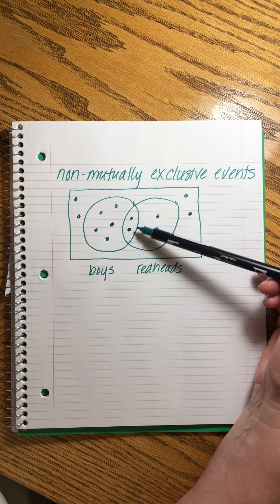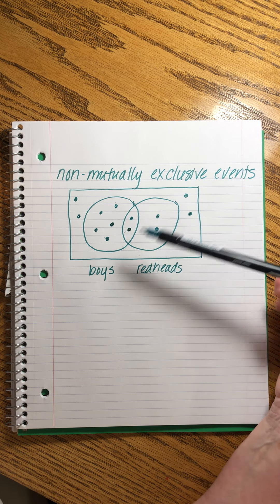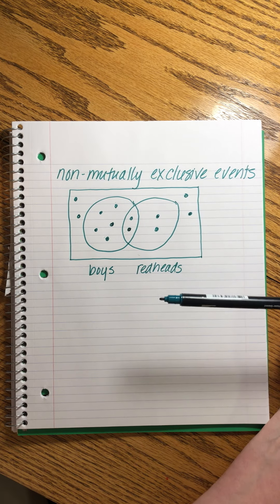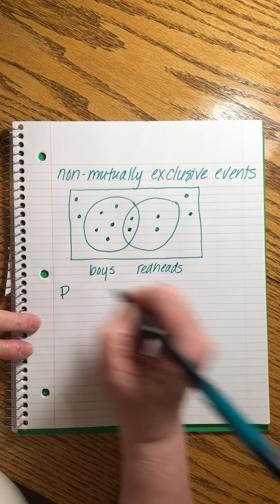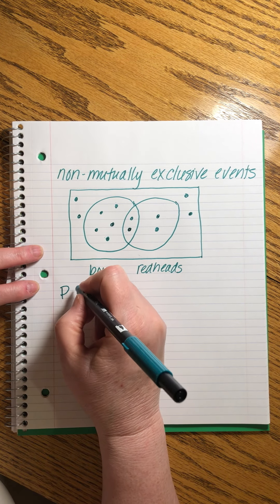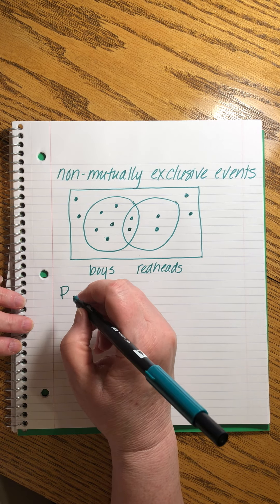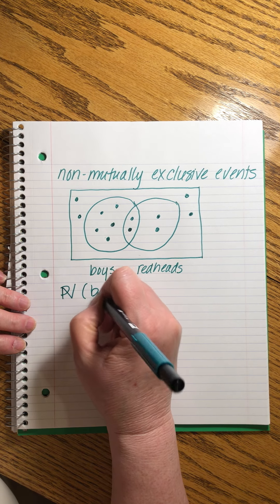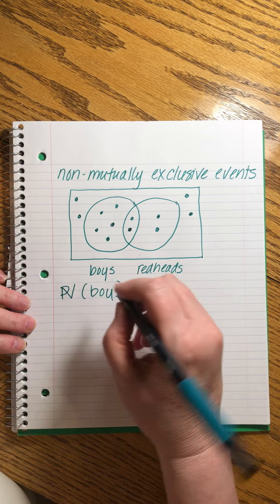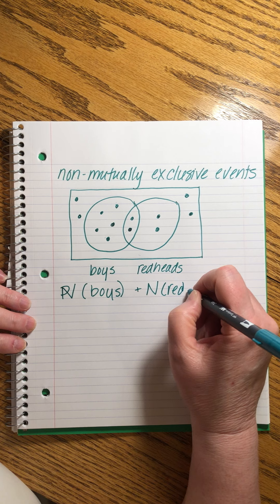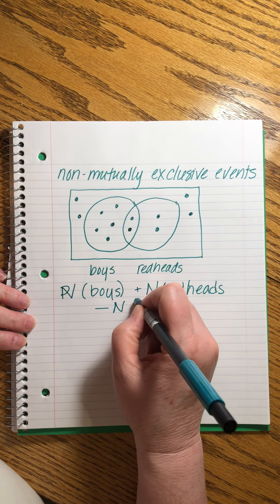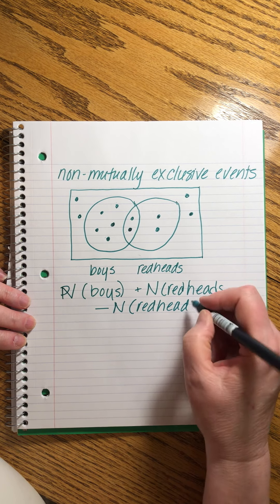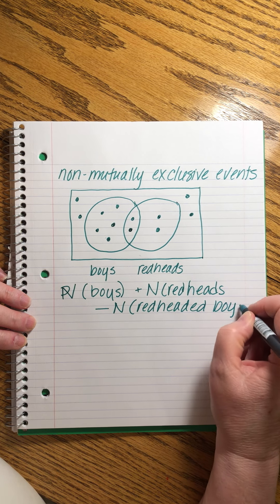We've got this group of boys and girls. The boys are identified here — there are seven of them, and two of them also happen to be redheads. The point here is that being a boy and being a redhead are not mutually exclusive; it is possible to be both. So we need to calculate the probabilities here a little bit more carefully. The number of boys plus the number of redheads — what we have to do is subtract out the number of redheaded boys. That's the overlap.